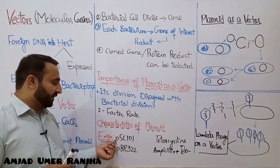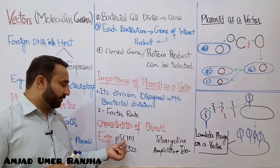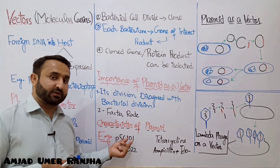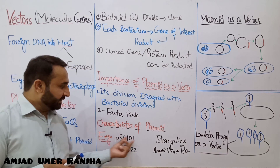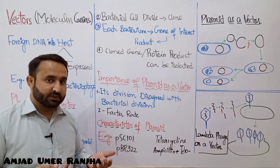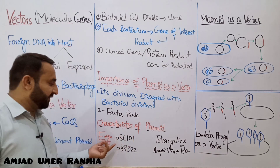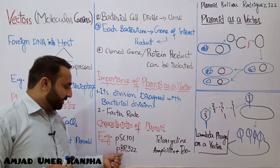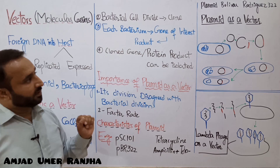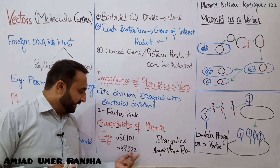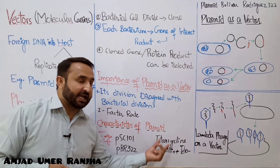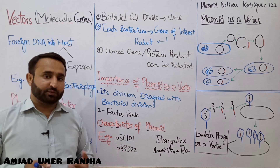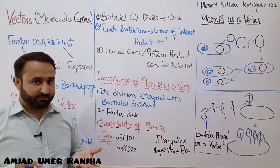Examples of plasmids: pSC101 — p for plasmid, S for Stanley, C for Cohen, 101 is its synthesis/manufacturing number. This is the plasmid of Stanley Cohen, who prepared it. It is tetracycline-resistant. pBR322 — plasmid of Bolivar and Rodriguez, 322 is the manufacturing number. pBR322 is resistant to both ampicillin and tetracycline. These two can be differentiated by their antibiotic resistance profiles.